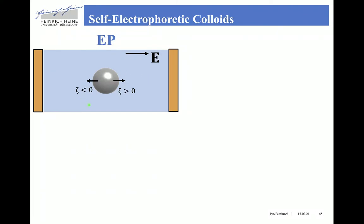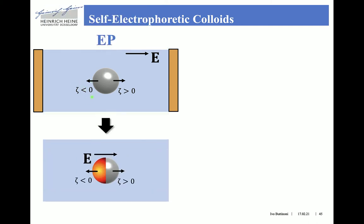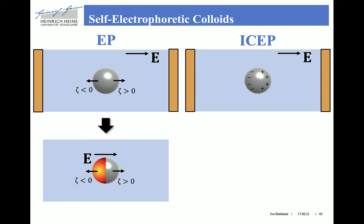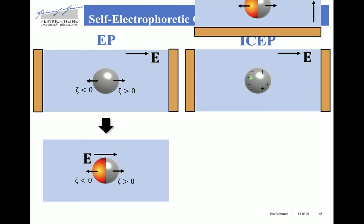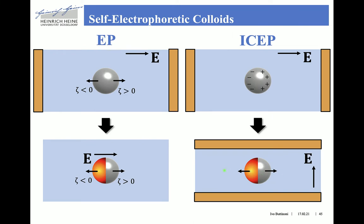In classical electrophoresis, particles move under an applied electric field, either one way or the other depending on the sign of the zeta potential. In self-electrophoresis, it's exactly the same, but the electric field is generated by the particle itself. We have also seen that transport in an electric field includes induced charge electrophoresis and induced charge electroosmosis, where extra slippage stems from the electropolarizability of the particle.